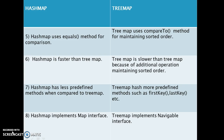HashMap internally uses the equals() method for comparison, but in the case of TreeMap, TreeMap uses the compareTo() method for maintaining sorted order.